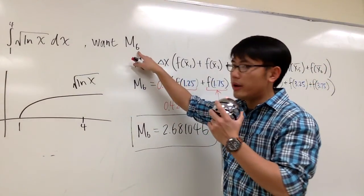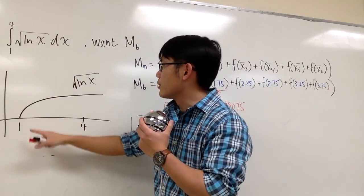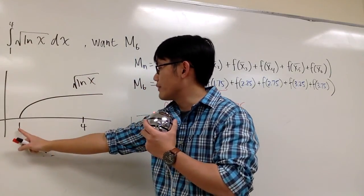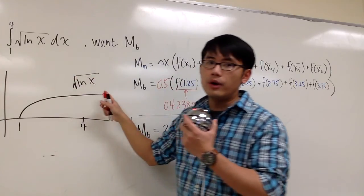We are going to use the midpoint formula where n equals 6 to approximate this integral. So it's the integral from 1 to 4, the region from 1 to 4 underneath this curve, square root of ln x.